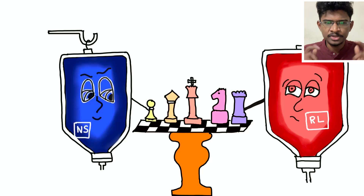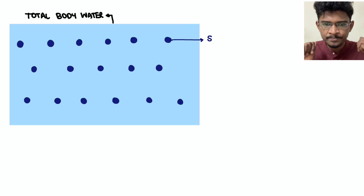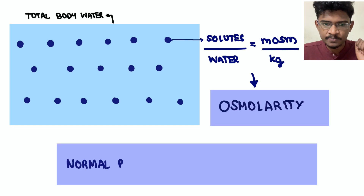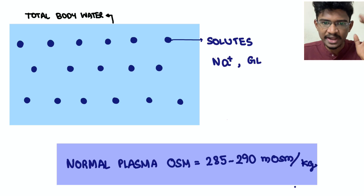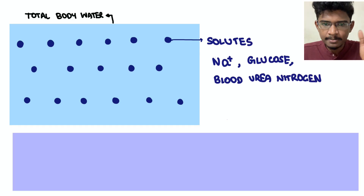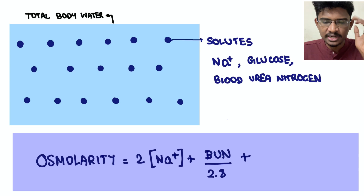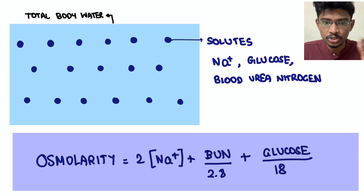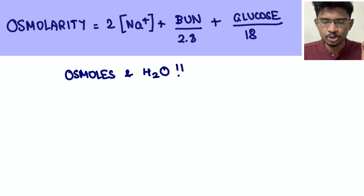The first basic concept you should know is osmolarity. If you take the total body water, solutes like sodium, glucose, and urea nitrogen are dispersed in it. The concentration in one kg of water is osmolarity, given by the formula: 2×Na + BUN/2.8 + glucose/18. Plasma osmolarity is mainly dependent on sodium, then BUN, then glucose. Normal plasma osmolarity is 285–290 mOsm/kg of water.